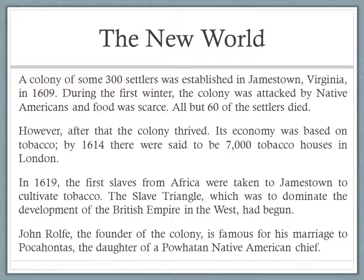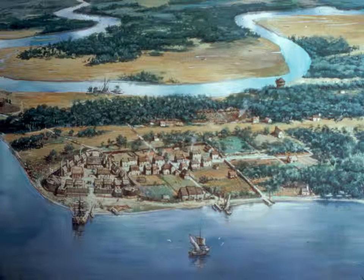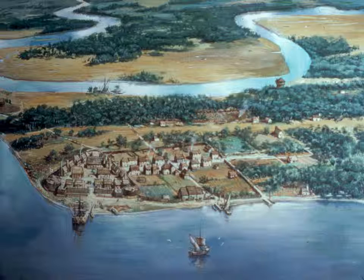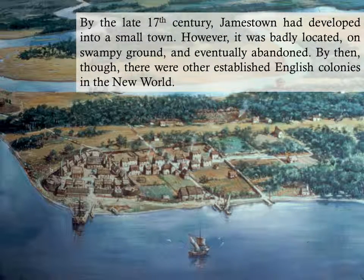That was another famous thing that happened during James's reign. Here is the colony as it probably looked around 1680 — about 50 or 60 years after its founding. It grew up into something like this, but it was never very successful. It's very low down at sea level, got flooded easily, and they eventually abandoned it — there's nothing there now, just the ruins. They found a better place to build a town, so it was eventually abandoned, but other colonies were growing up at this time.